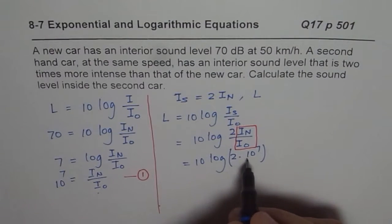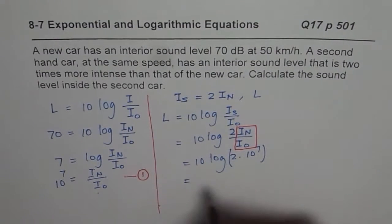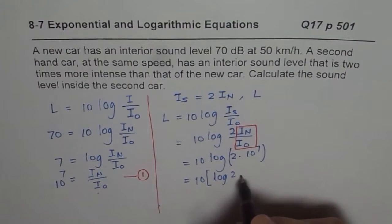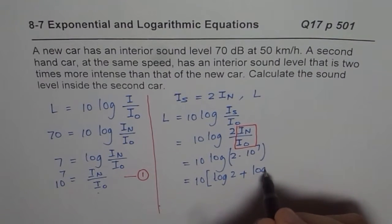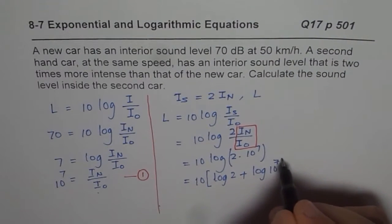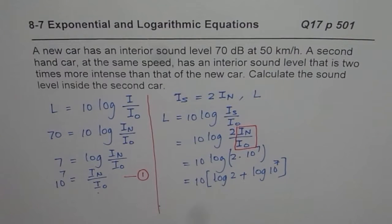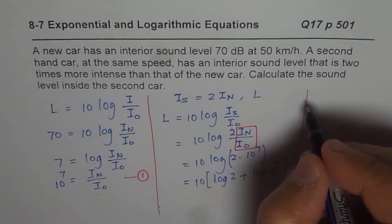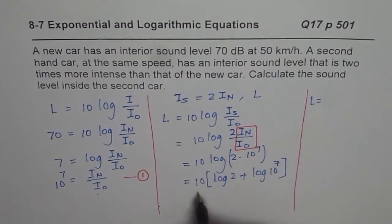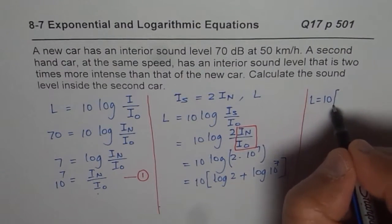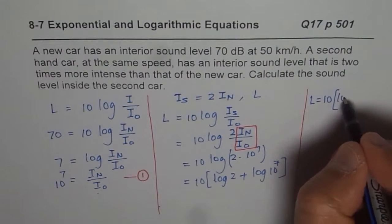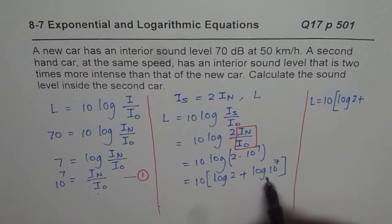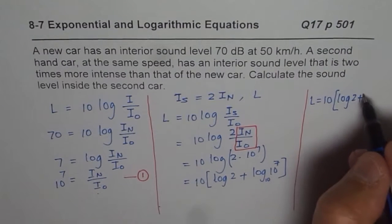Now we can use logarithm properties and write this as 10 of log 2 plus log of 10 to the power of 7. So the loudness is basically equals to 10 times log of 2 plus, this is to the base 10, so 10 to the power of 7 should be 7. Now we can use the calculator and find the answer.